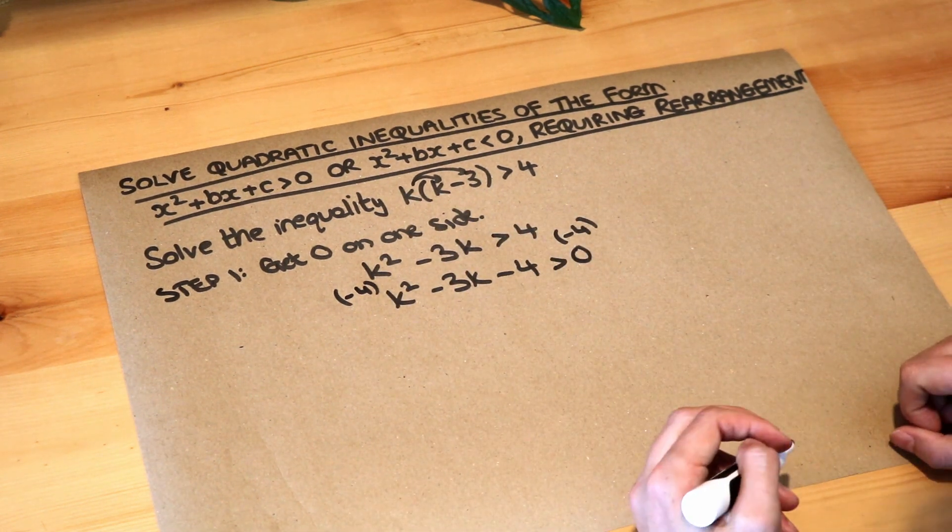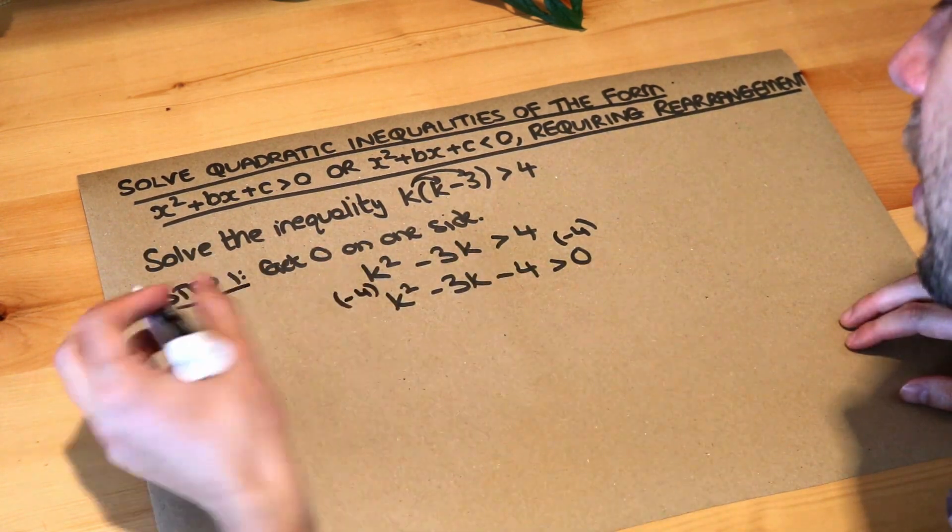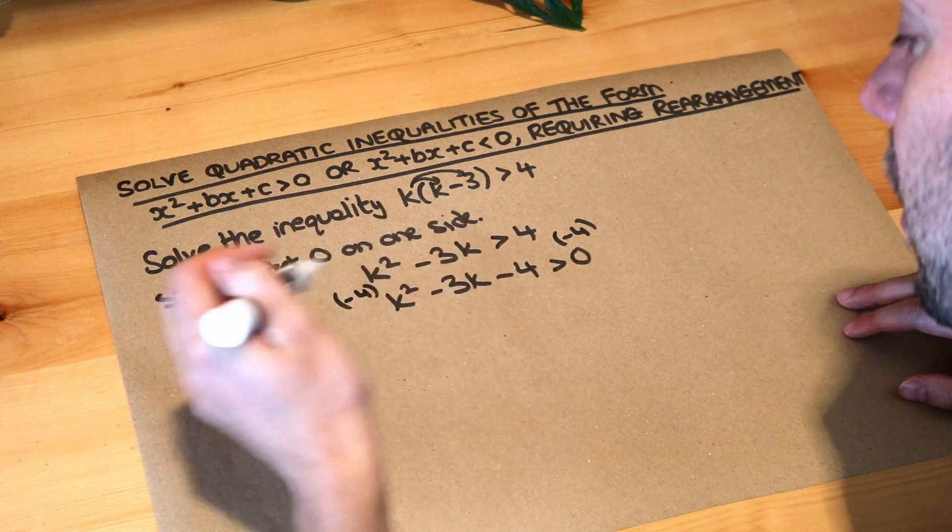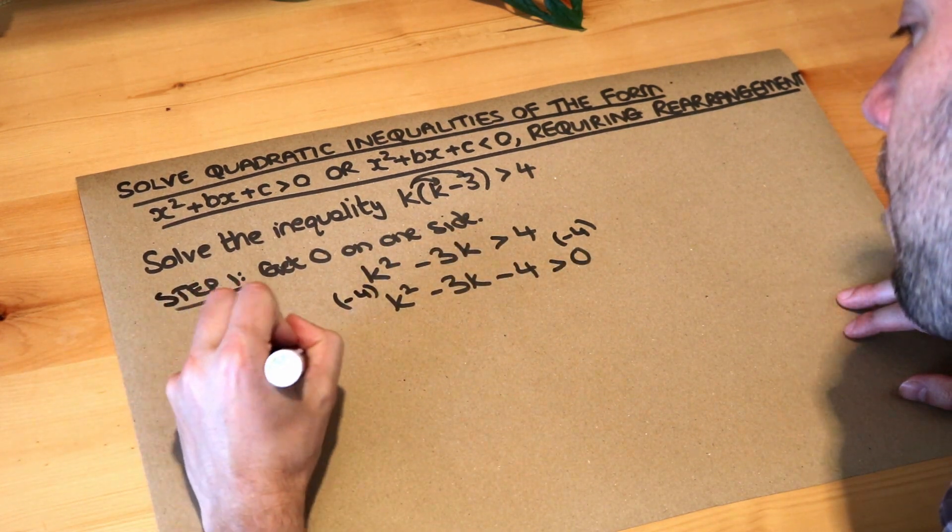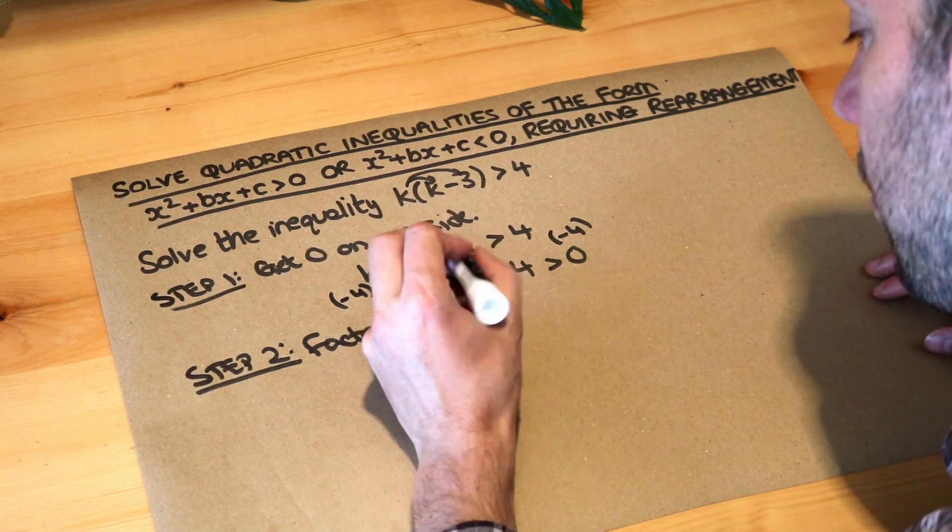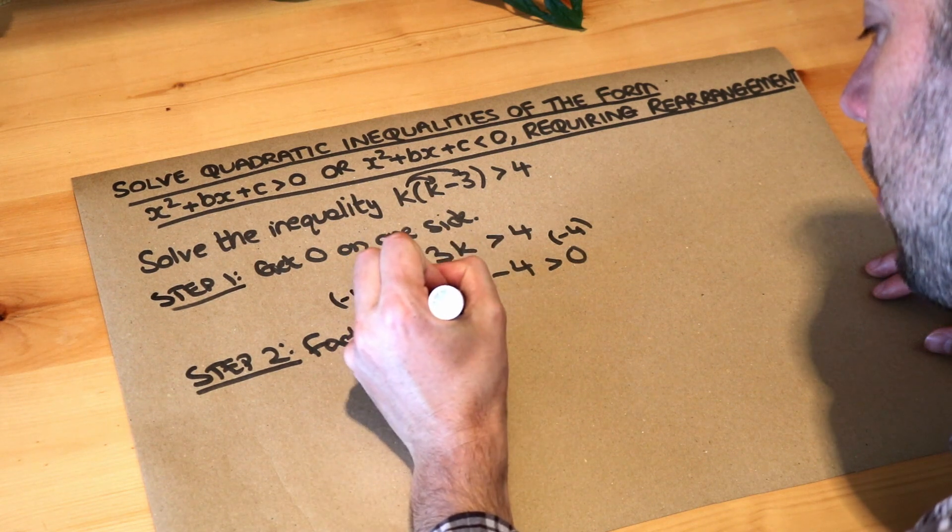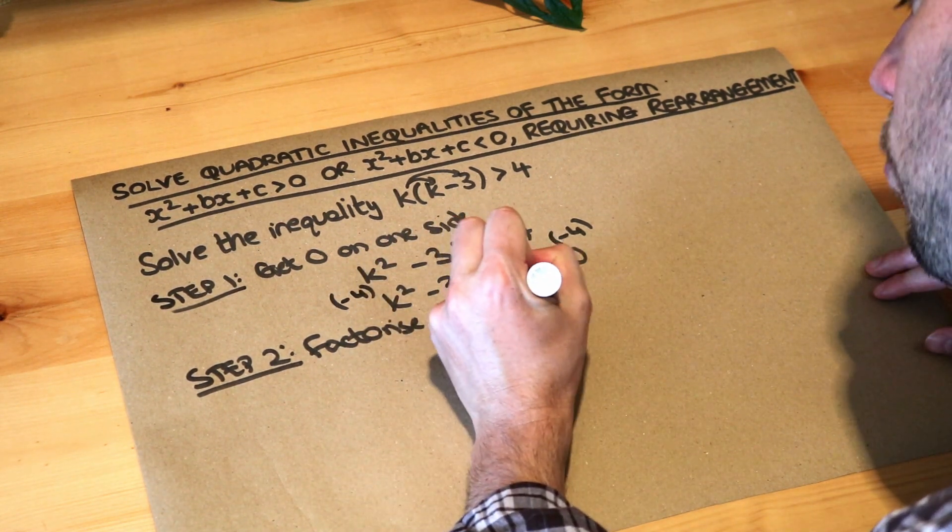And now we have a quadratic inequality in the form that we've seen in previous videos. So how do we deal with inequalities like this? Well the next step is just to factorise. We need two numbers that add to give the minus three and they times to give that minus four.